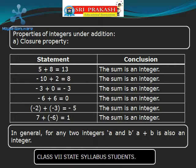Let us take two integers 5 and 8 and add them: 5 plus 8 equals 13. The sum 13 is also an integer. Now let us take two integers minus 10 and 2 and add them. We get 8, which is also an integer.